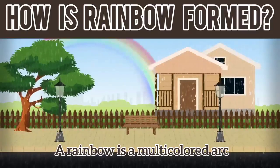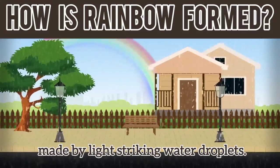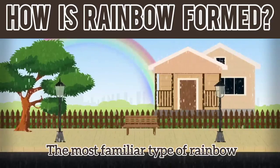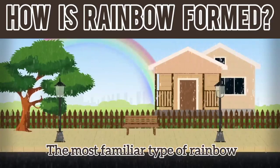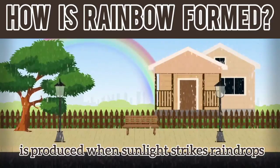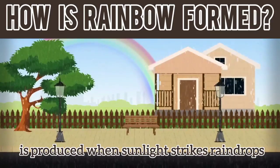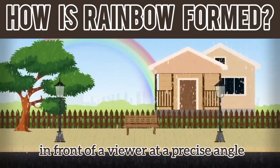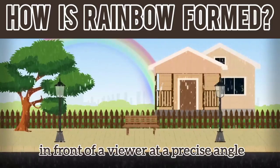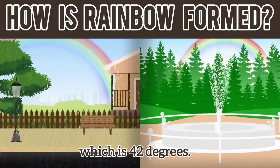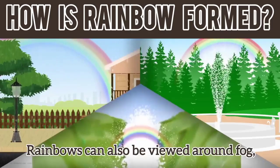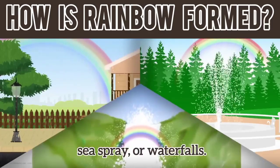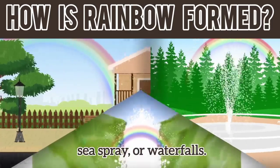A rainbow is a multicolored arc made by light striking water droplets. The most familiar type of rainbow is produced when sunlight strikes raindrops in front of a viewer at a precise angle, which is 42 degrees. Rainbows can also be viewed around fog, sea spray, or waterfalls.